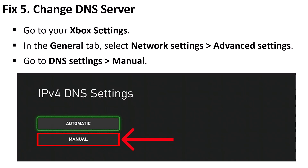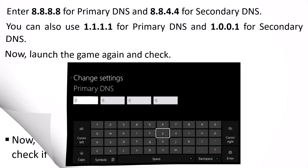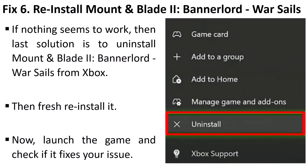Fix five: change the DNS server. Go to Xbox Settings, in the General tab select Network Settings, Advanced Settings, go to DNS Settings, and set it to Manual. In the primary DNS enter 8.8.8.8 and in the secondary DNS enter 8.8.4.4, save it, launch the game and check. If not resolved, repeat the process: set primary DNS to 1.1.1.1 and secondary DNS to 1.0.0.1, save, relaunch the game, and check.